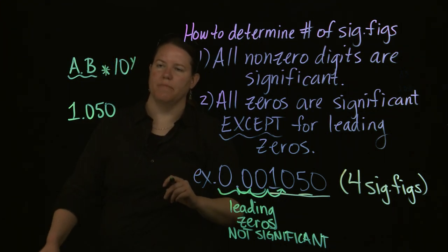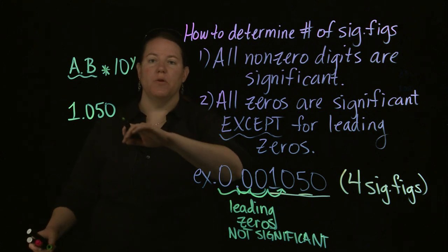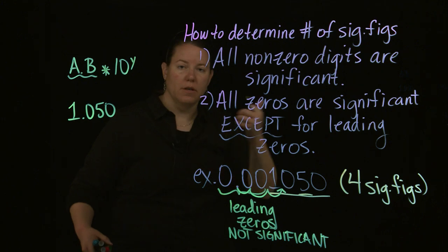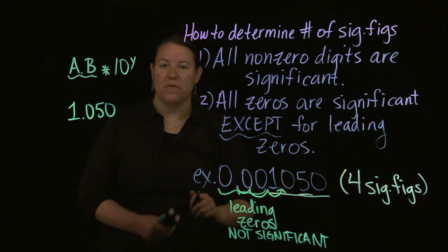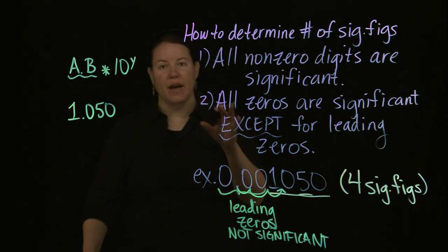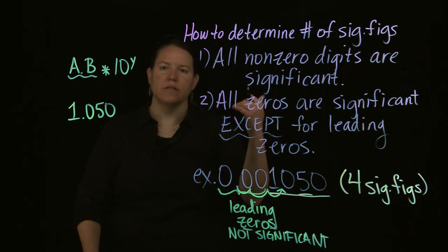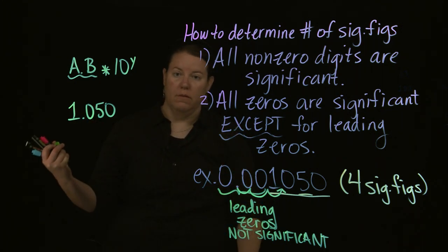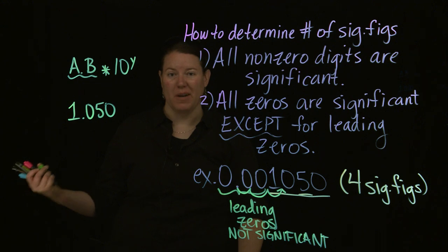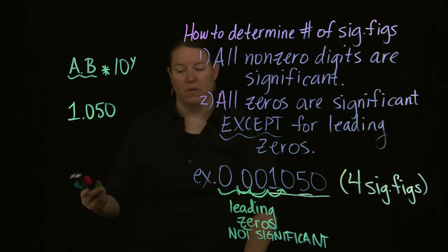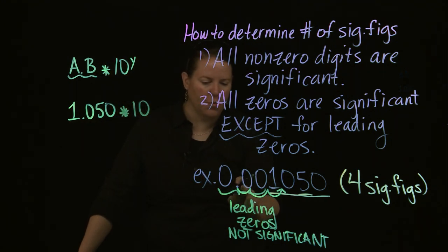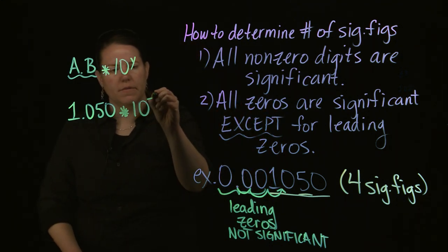That exponent tells me the number of spaces I moved the decimal point. If you move it to the right, the exponent is negative. If you move it to the left, it's positive. A negative exponent conveys that you're dividing by 10, meaning you have a number smaller than 1. A positive exponent means you're multiplying by 10, meaning you have a number greater than 1.